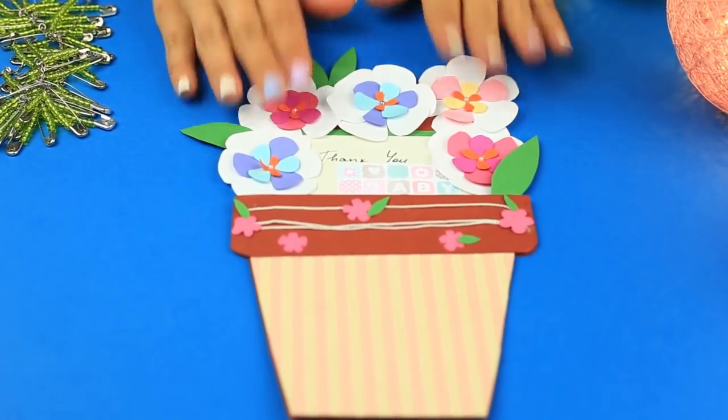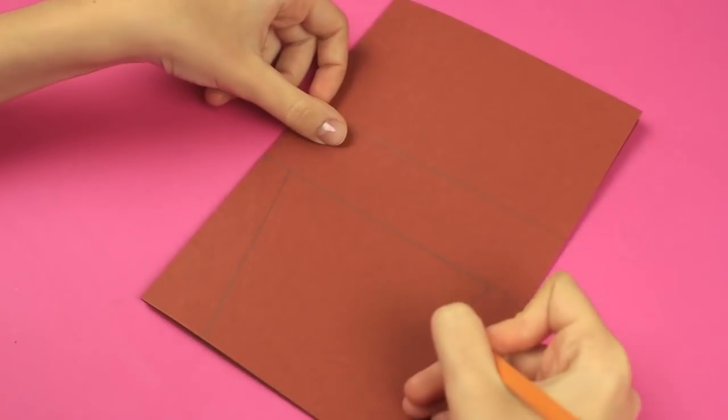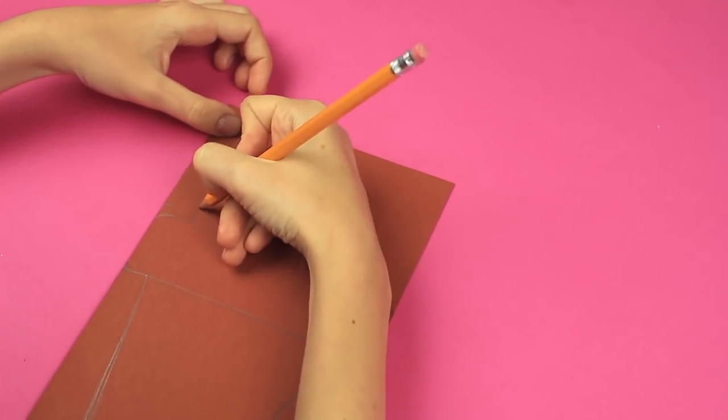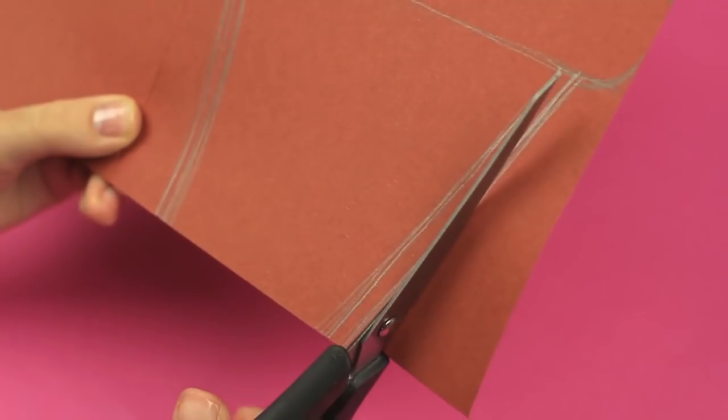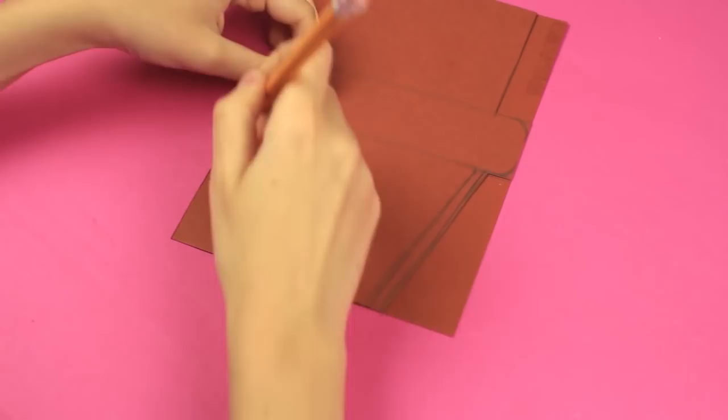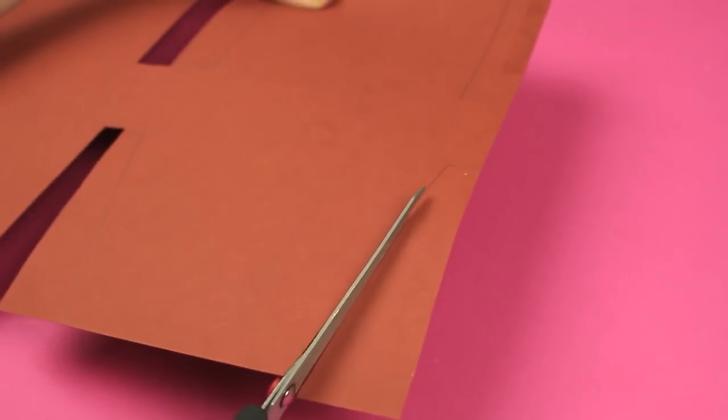We'll make a flower pot shaped card. Draw a flower pot on a cardboard base folded in half. Outline a square on top. To make it neat, cut out the pot on the front side first. Then, trace the pot to get it on the back. Cut it out. Cut off the square on the front.